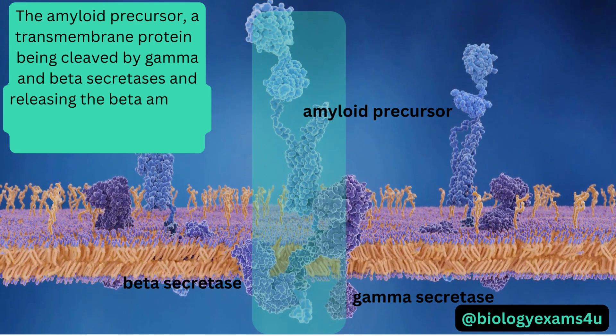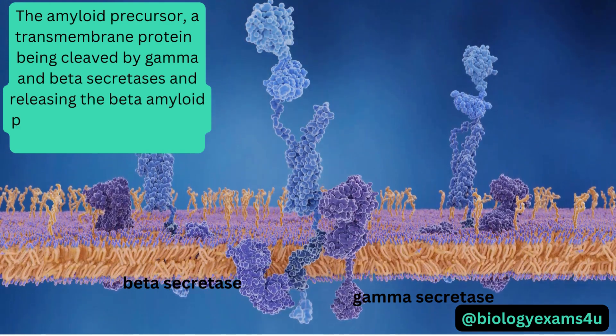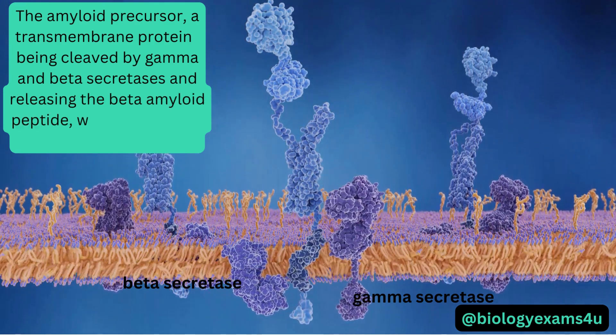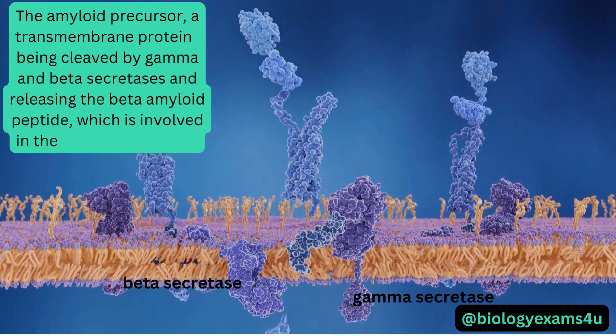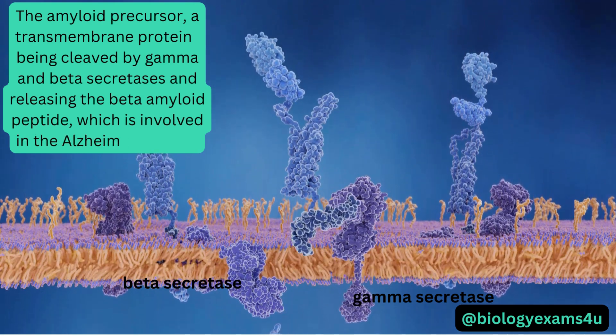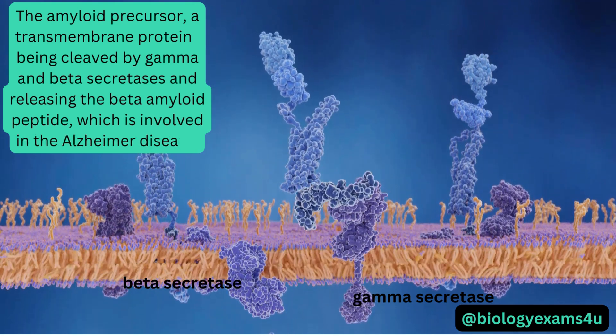Normally, oligomers and plaques are cleared from the brain, but as we age, the body is less capable of stopping them from building up.